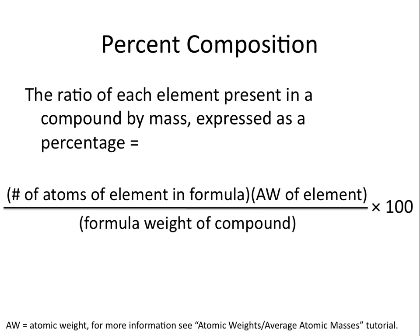We can determine the percent composition of different elements within a compound by taking the number of atoms of the element in the formula, multiplied by the atomic weight of the element, divided by the formula weight of the compound, and multiplying that number by 100 to get a percent.